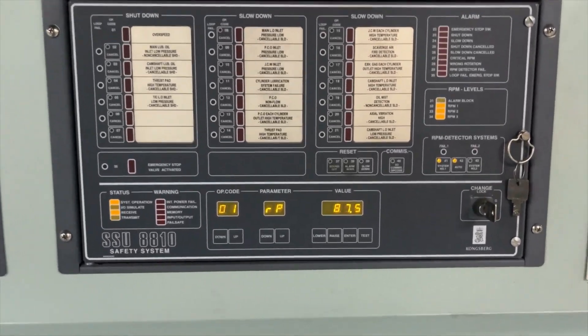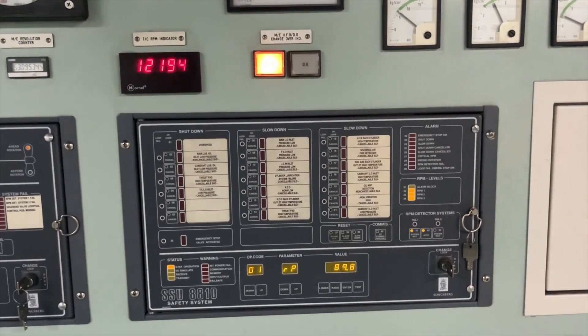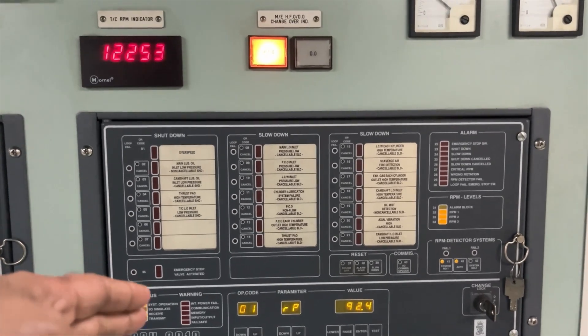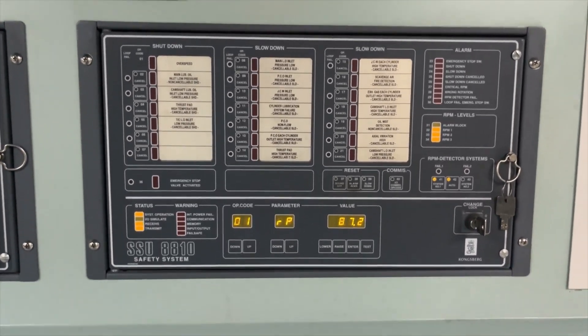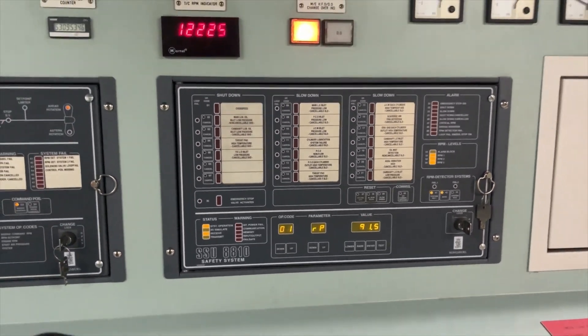All the alarms connected for slow down and shut down are connected with this unit. If I talk about any alarms which are there in main engine, it is connected to this safety system unit and this is the RPM which is showing right now for the main engine.